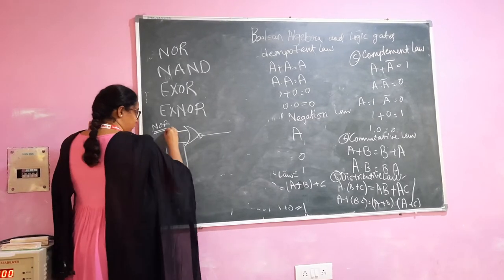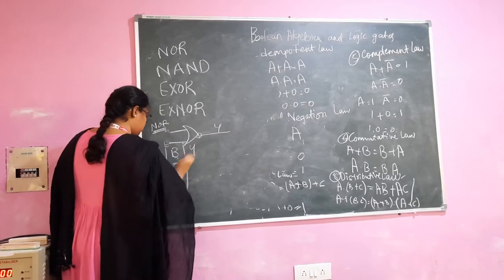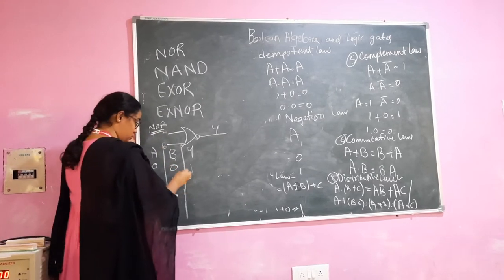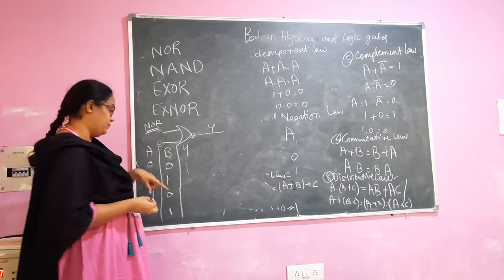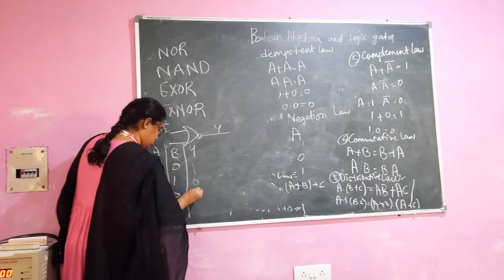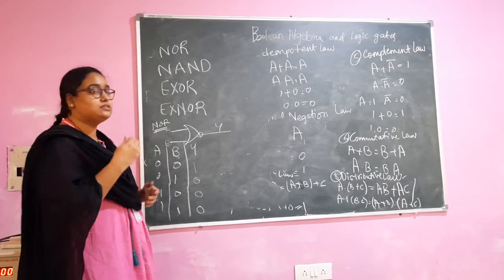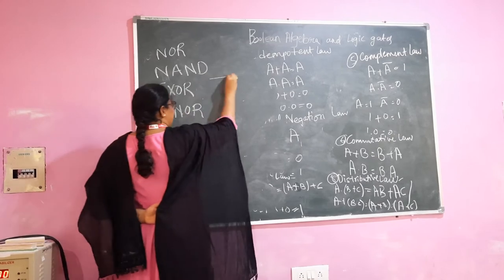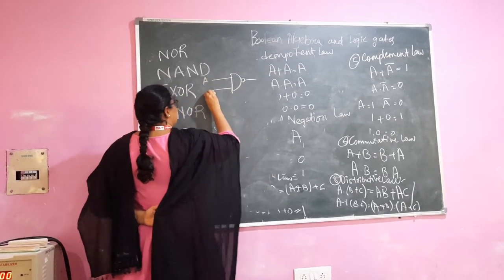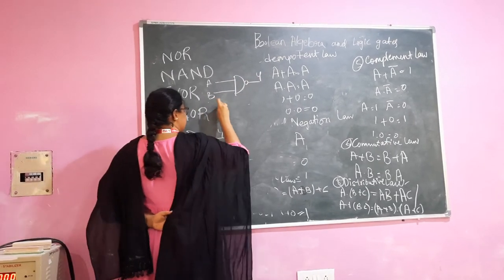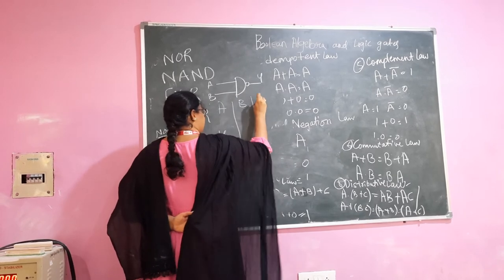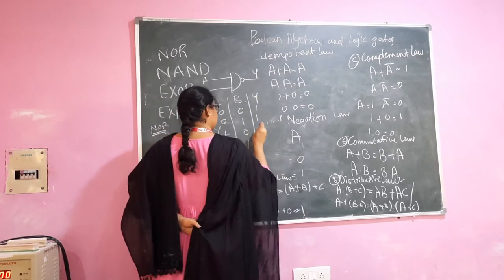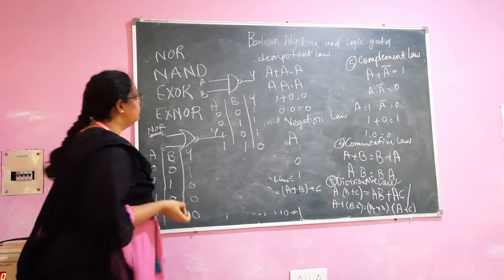For the NOR gate truth table, we take inputs A and B and output Y. Since it is a NOR gate, 0 plus 0 gives 0 and its complement is 1. Similarly, for NAND gate, it is the complement of AND gate — just as we took the complement of OR, we take the complement of AND. This is how the NAND gate is represented, and similarly we can represent the output table of the NAND gate.